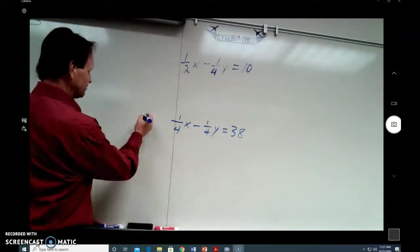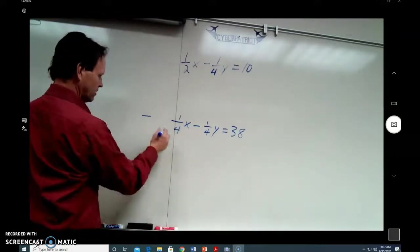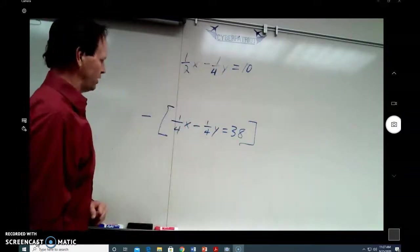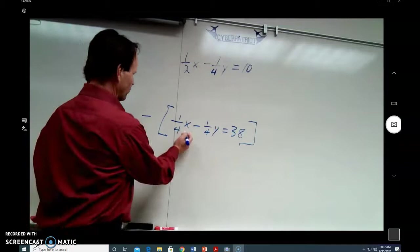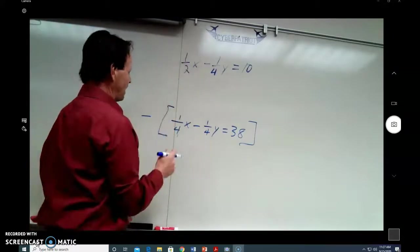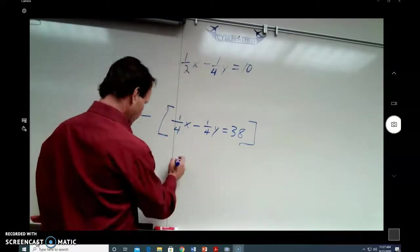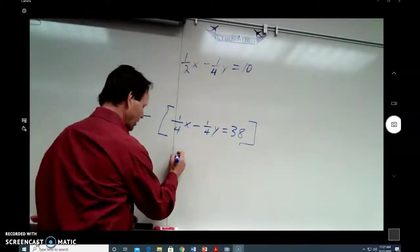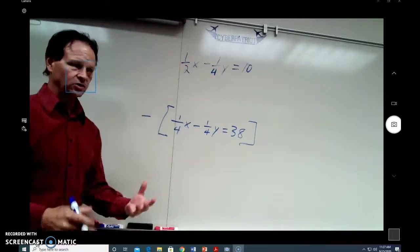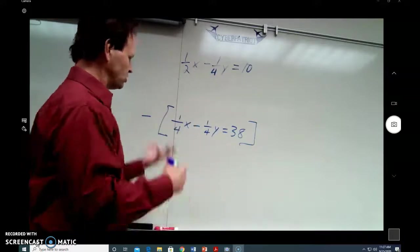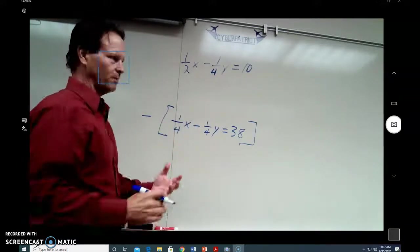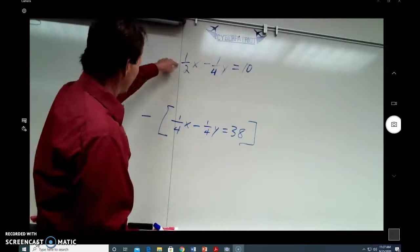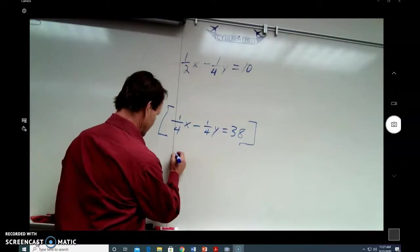So, if I subtract this entire equation from that entire equation, 1 fourth x from 1 half x equals 1 fourth x. 1 fourth plus 1 fourth equals 1 half. So, we've got to get good, by the way, at fractions. We've got to get good at subtracting fractions just in general. We know that this is a math skill that a lot of people struggle with. But anyway, you might not see that right away, but 1 half minus 1 fourth is 1 fourth.